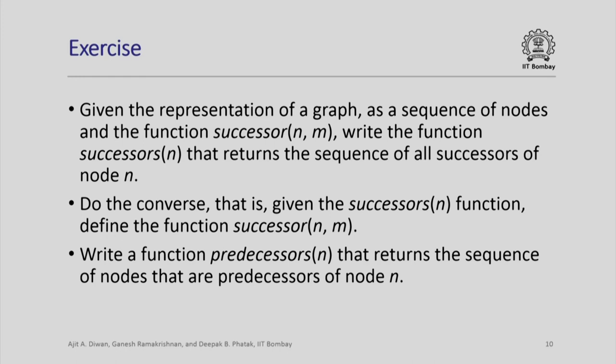Assume you are given the representation of a graph as a sequence of nodes and a function successor(n, m) which tells us whether m is a successor of n or not. Using this we can write a function successors(n) that returns the sequence of all successors of a node n. We can also do the converse — given a function that returns all successors of node n, we can write a function which tells us whether a given node m is a successor of n. We can also write a function predecessor(n) that returns the sequence of nodes that are predecessors of a given node n, or a function predecessor(n, m) which tells us whether n is a predecessor of m. All functions on graphs can be defined using just these two, so understanding these will be crucial for understanding graphs.